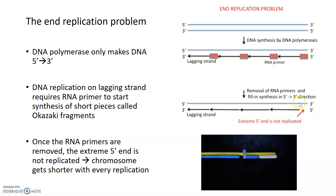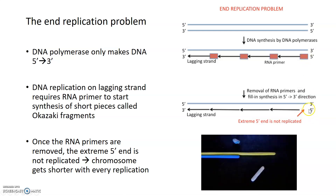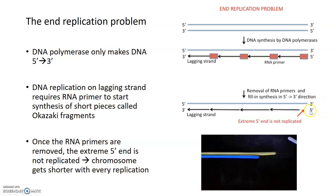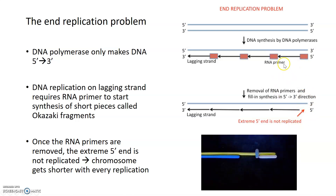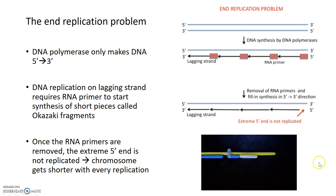But there's one primer at the extreme five prime end of the DNA that is not replicated. Because if DNA polymerase needs to add nucleotides to an existing hydroxyl group, there's nowhere for that primer to attach to at this particular part of the DNA. That would mean that every time you replicate this DNA, that extreme five prime end is not replicated, and therefore the chromosome will end up getting shorter and shorter with every replication.